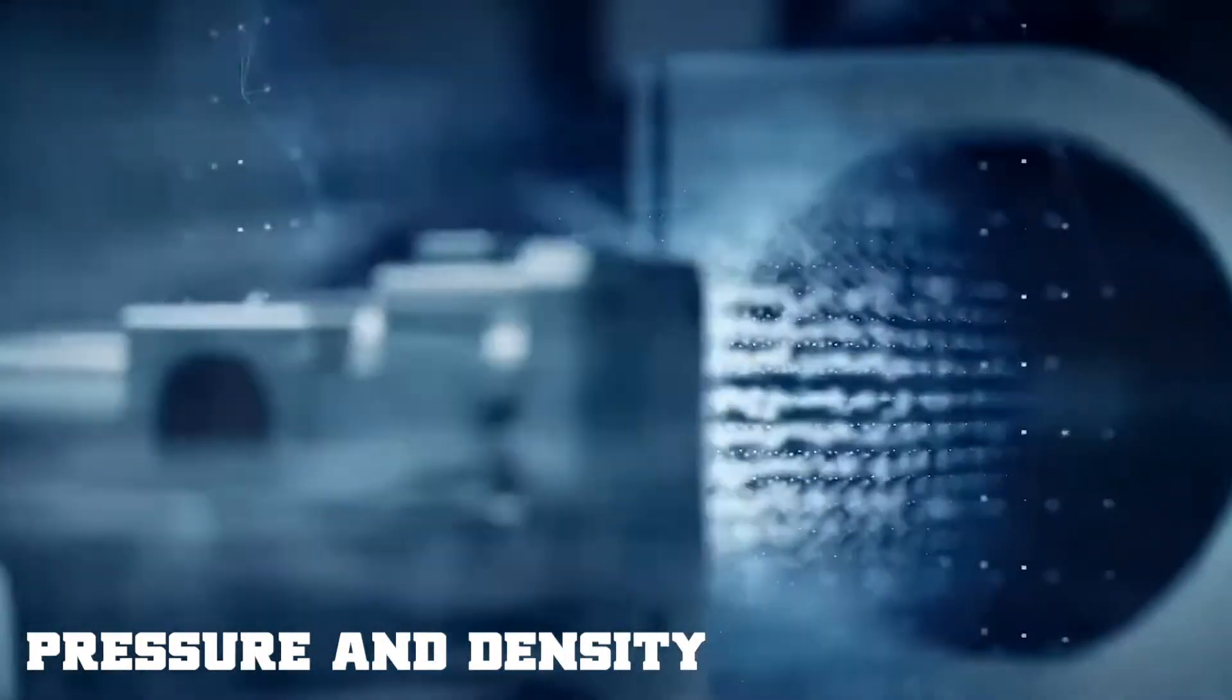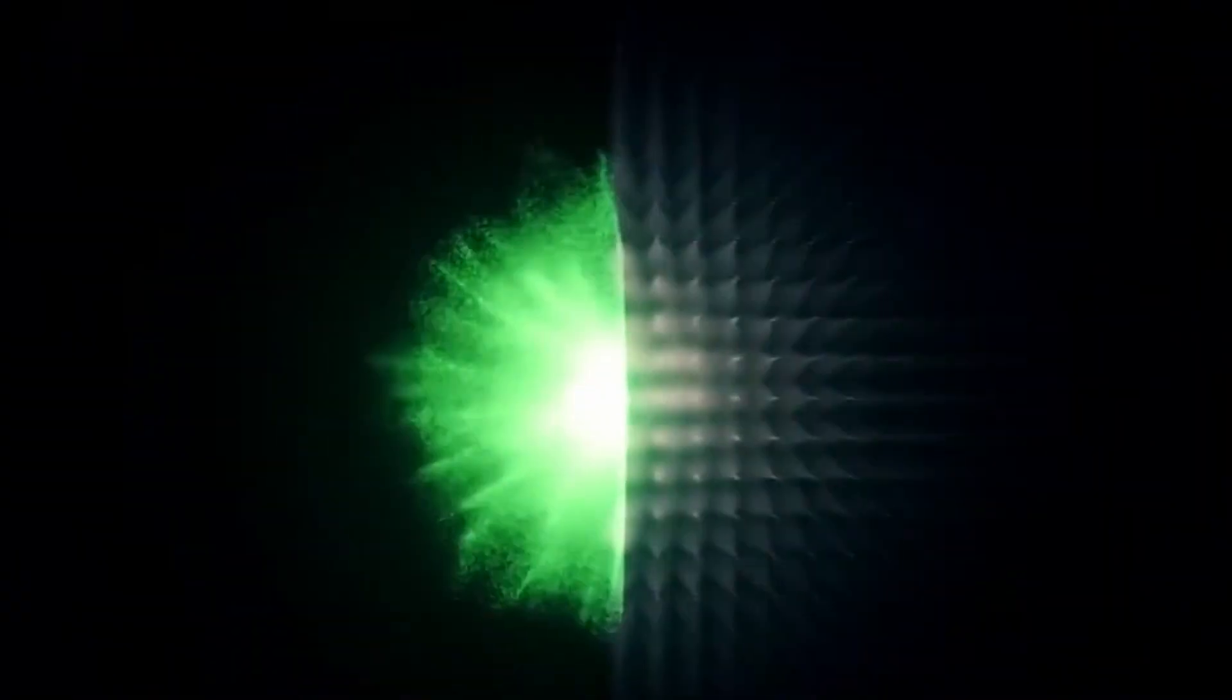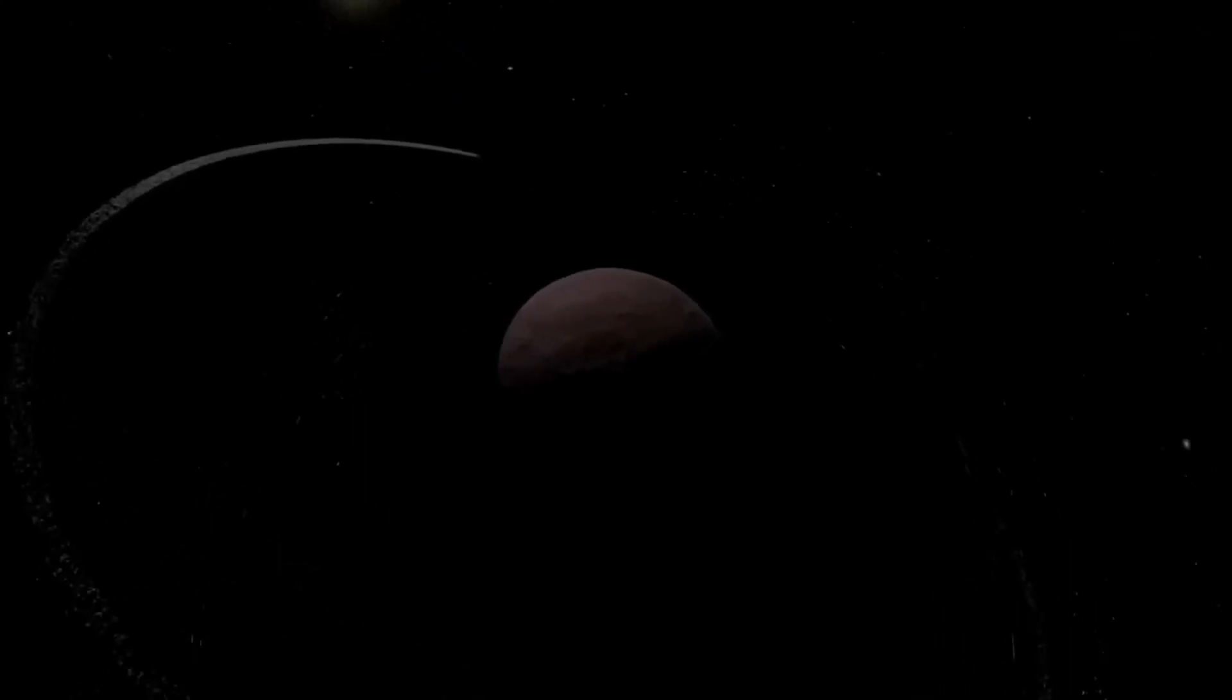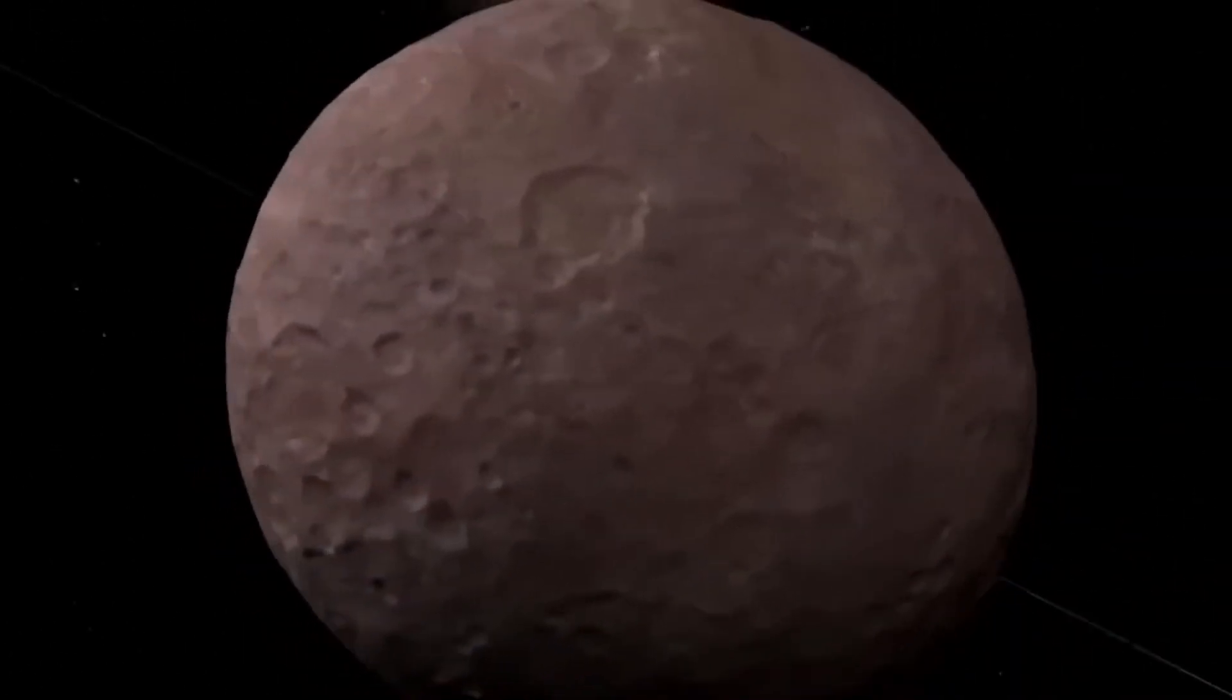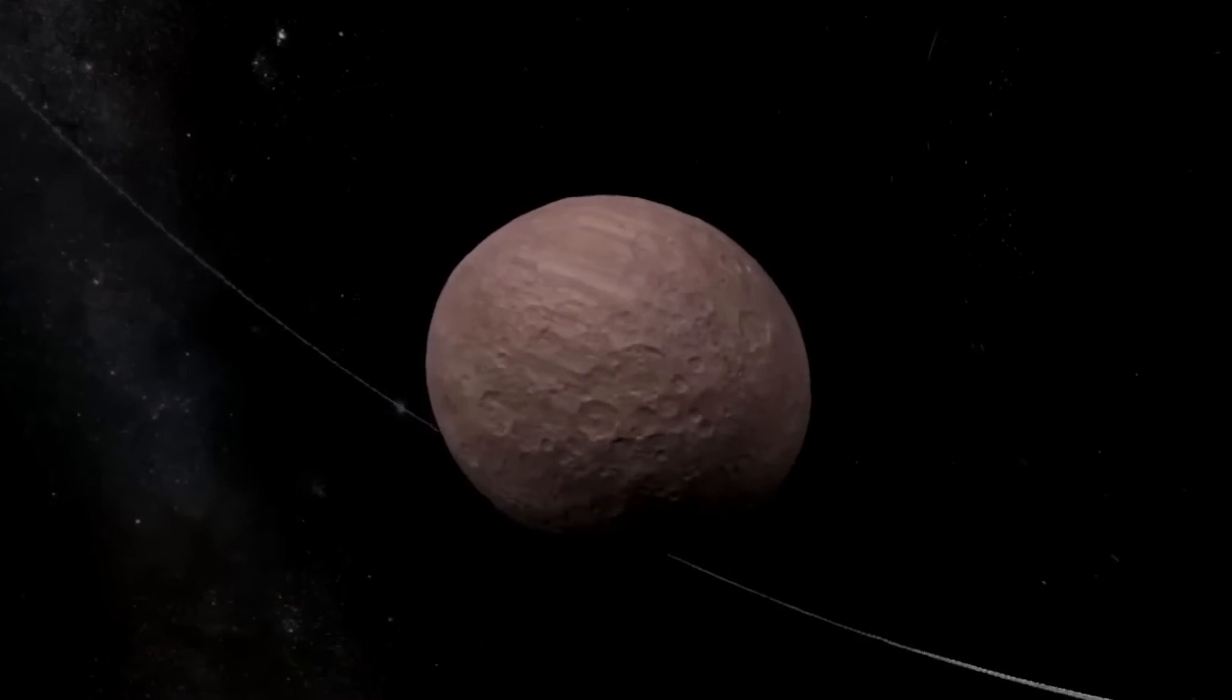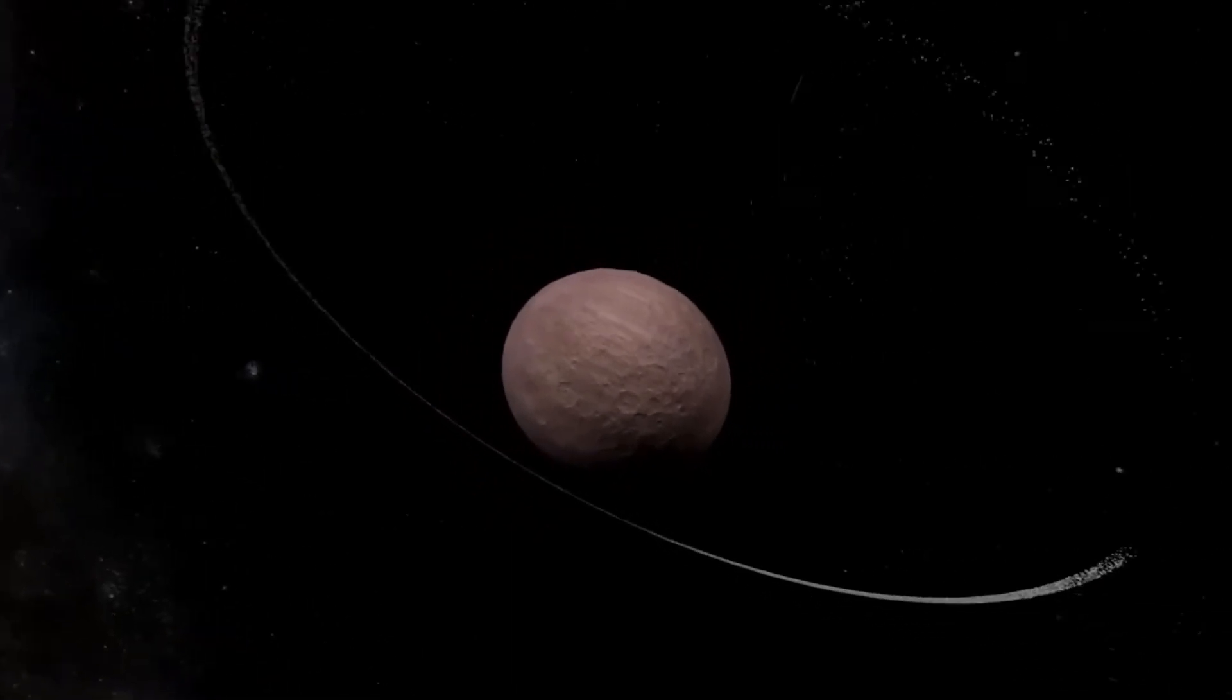Pressure and density: Neptune is a gas giant, composed mostly of hydrogen and helium, with a small fraction of other elements and compounds. As you descend into the planet's atmosphere, the pressure and density increase dramatically due to the increasing weight of the overlying gases. The following information provides an overview of the pressure and density profiles in Neptune's atmosphere.